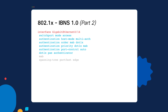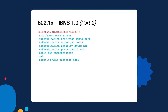To enable MAB, you will use the mab command. Lastly, in order to speed up the 802.1x authentication process, it's recommended to set this interface to portfast. If you do not set it to portfast, it will take a little bit longer for the spanning tree process to go through in order to activate the port so that we can start the process of authenticating using 802.1x.